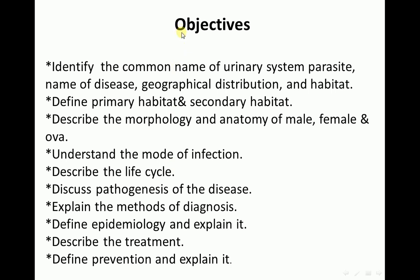Objectives of our lecture: to identify the common name of the urinary system parasite, name of disease, geographical distribution, and habitat. Define primary habitat and secondary habitat. Describe the morphology and anatomy of male, female, and ovary. Understand the mode of infection. Describe the life cycle. Discuss pathogenesis of the disease. Explain the methods of diagnosis. Define epidemiology and explain it. Describe the treatment. Define prevention and explain it.